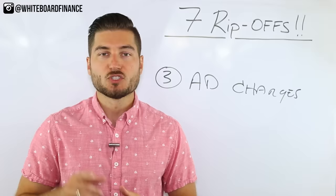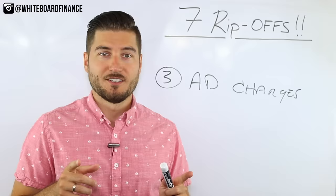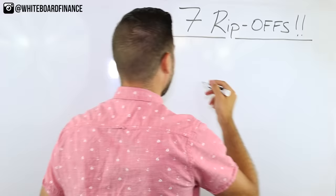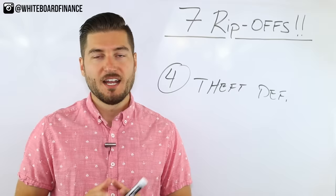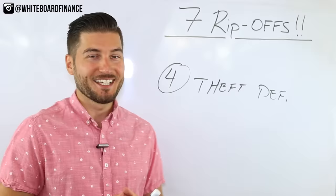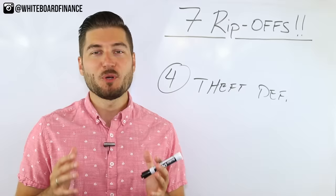Number four is theft deterral products. These are hilarious because a lot of the time—well I don't want to disparage this industry—there's some stuff that's legit, you know there's some GPS tracking devices, things like that that can actually help you recover your car. I'm not talking about those. I'm talking about the stuff like VIN etching or wheel locks. This stuff has so much markup in it, it's not even funny. I'm talking hundreds if not thousands of percent by the dealer.